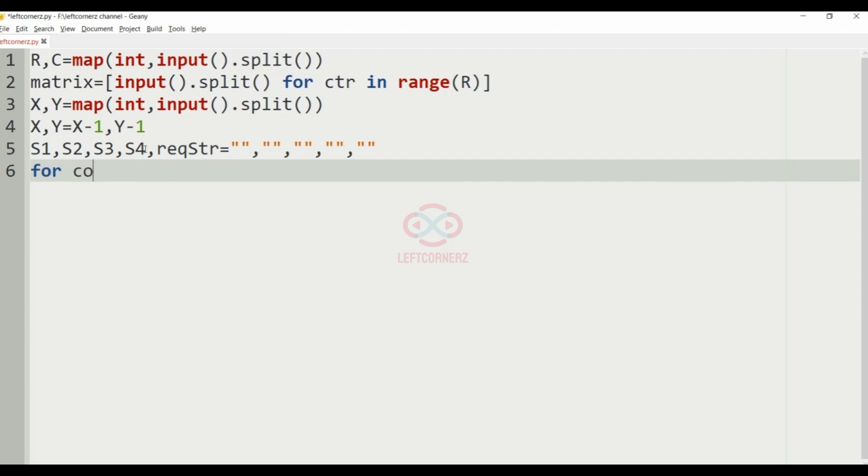And now we have, for row in range X comma minus 1 comma minus 1, S1 will be incremented with the matrix row Y.